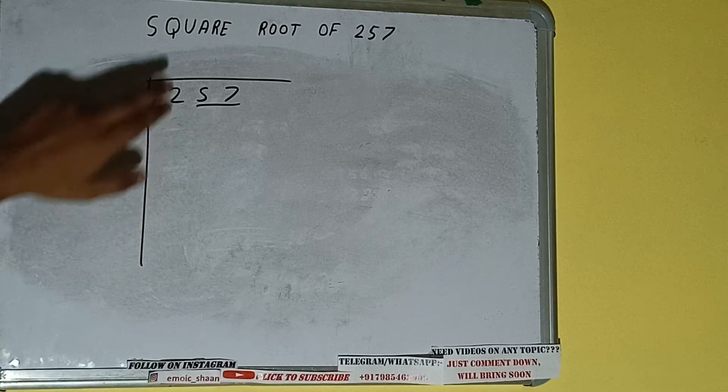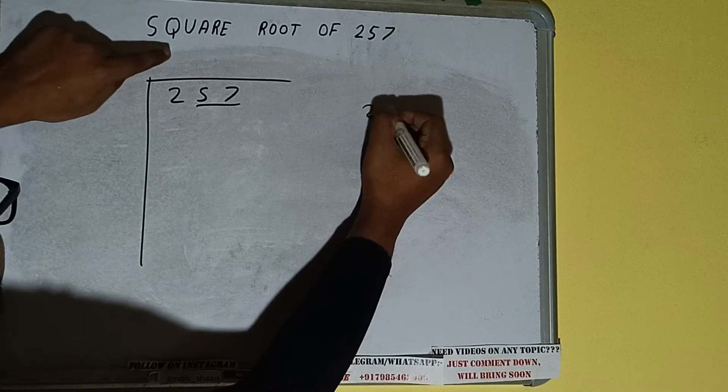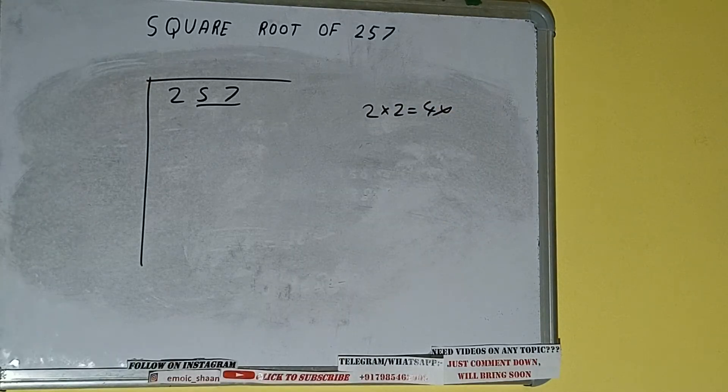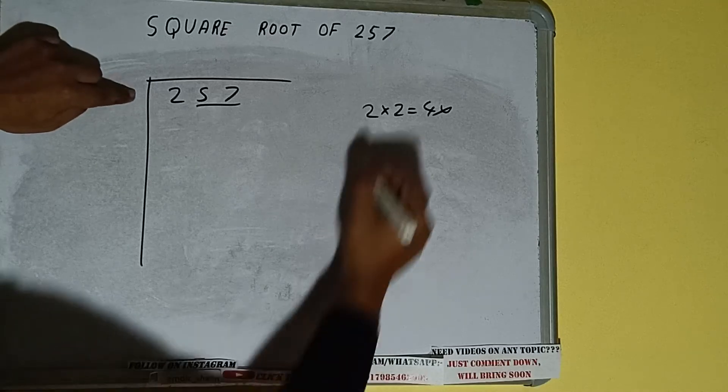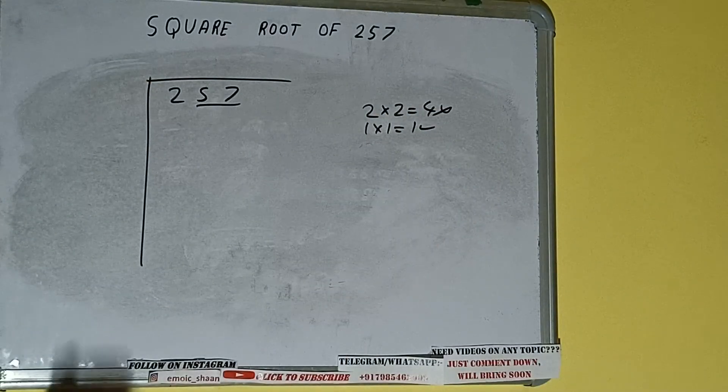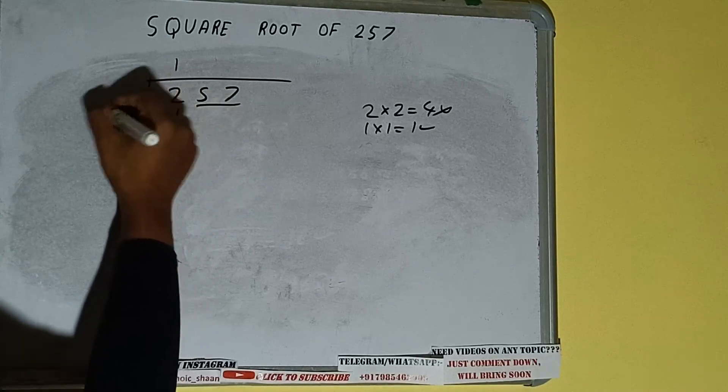So if we write two here and two here, it will be four, which is greater than two, so we cannot use it. If we write one here and one here, it will be one, which is good to use. So one here and one here, one subtract one, zero will be left.